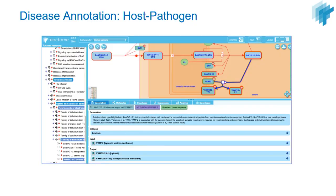The type I'm going to focus on here is host-pathogen disease interaction, where we mark the pathogen proteins or other molecular entities and their reactions in red to make the distinction from host reactions. We annotate usually only the interface between the two; we don't try to annotate everything in the pathogen, as that would simply not be feasible from a curation effort point of view.